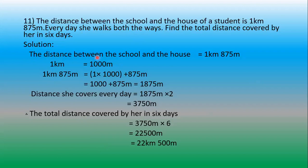The distance between the school and the house is given as 1 kilometer 875 meters. Converting into the smaller unit — meters: 1 kilometer 875 meters means 1 × 1000 plus 875, which equals 1000 plus 875 — that is 1875 meters.